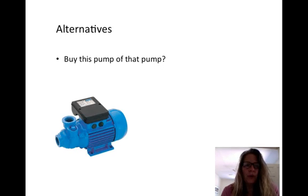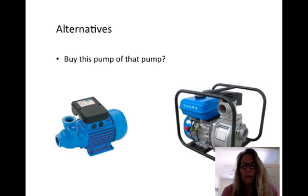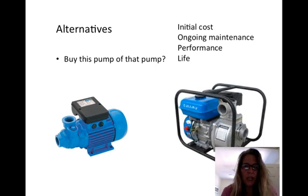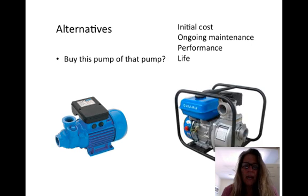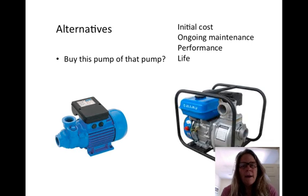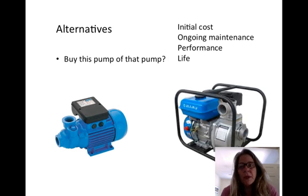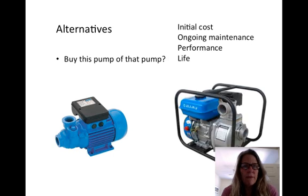One alternative that's an easy choice is: are we going to buy this pump or that pump? They both might have a different initial cost, different ongoing maintenance costs, performance, or lives. We need to spell out those two alternatives and compare them directly. This is a very good example of mutually exclusive alternatives — meaning we do one or the other, not both. Most alternatives we look at are that way, and this is a simple example of the kinds of decisions you might make as an engineer.